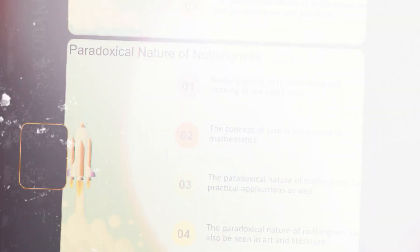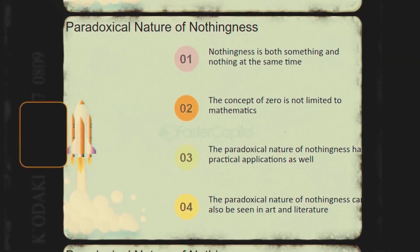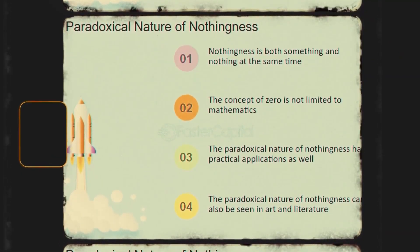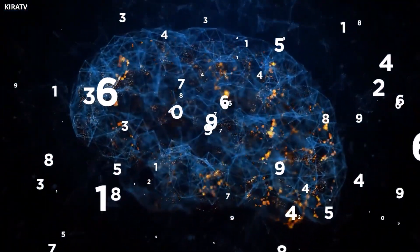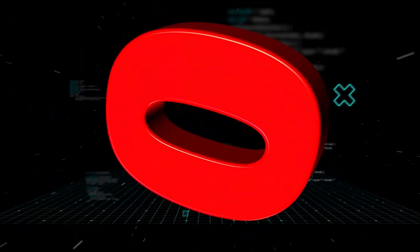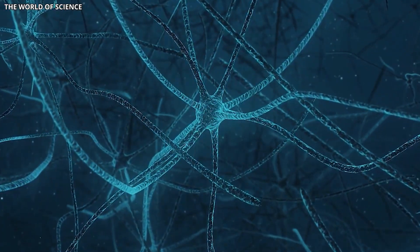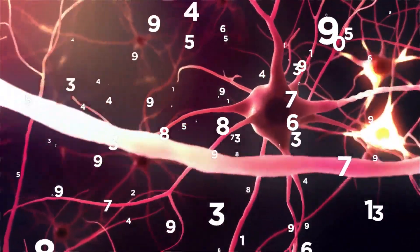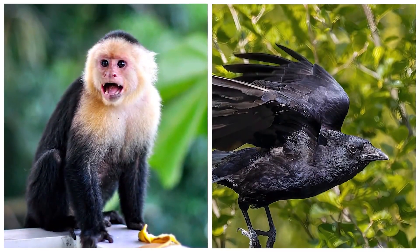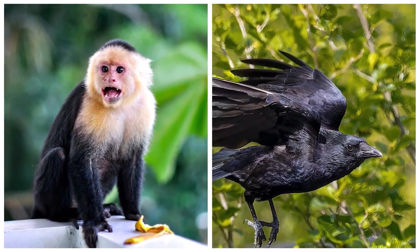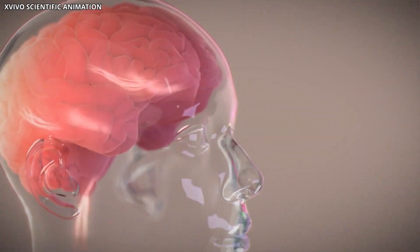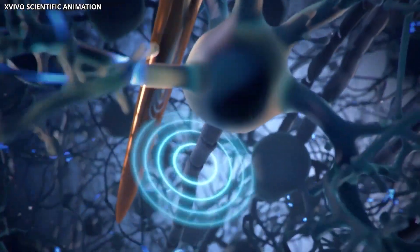For researchers studying how the brain processes numbers, zero remains the most fascinating number. Nieder's research has shown that certain neurons in the brain are tuned to specific numbers, and some even respond to zero, which aligns with previous findings in animals like monkeys and crows. This discovery confirms that the human brain, too, has a specialized way of processing the idea of nothingness.